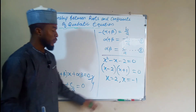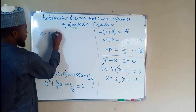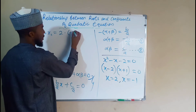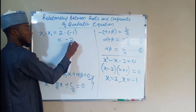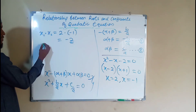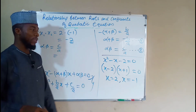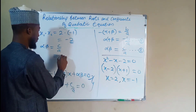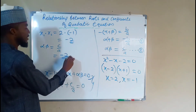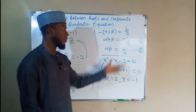Now for multiplication: x₁ × x₂ = 2 × (-1) = -2. By our formula, alpha × beta = c/a. Here c = -2 and a = 1, so c/a = -2/1 = -2. The two values are exactly the same. So you don't have to solve the equation to perform this operation — just apply the formula c/a directly.